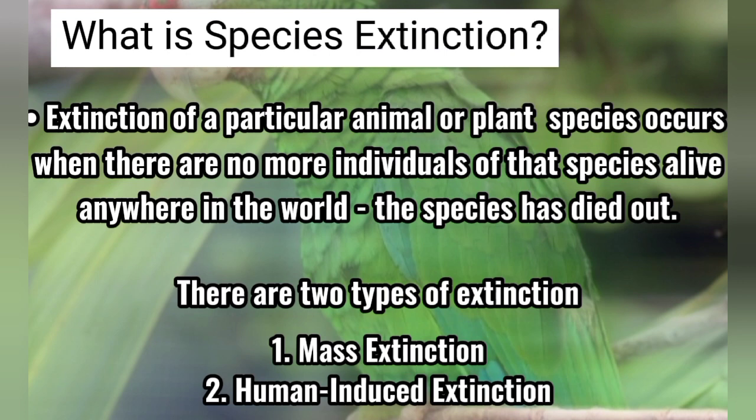What is Species Extension? Extension of a particular animal or plant species occurs when there are no more individuals of that species alive anywhere in the world — the species has died out. Extension in biology is the dying out or extermination of a species.